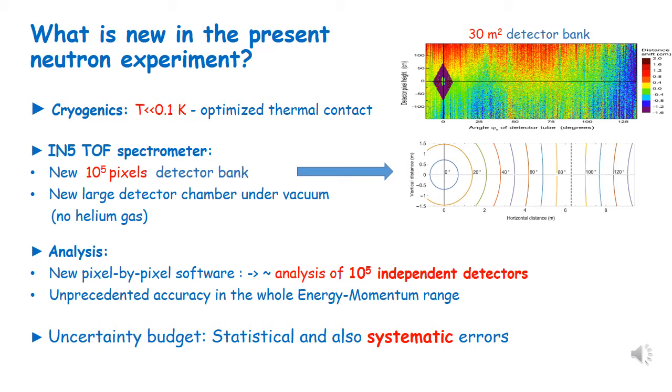The analysis is done with a new program that analyzes pixel by pixel, that is, we have 10 to the 5 independent detectors which cover different angles, and there are many pixels for a given angle. This gives us an unprecedented accuracy in the whole energy and momentum range, and also because we are able to treat statistical errors very easily, but also we have done a big effort treating systematic errors, and this is not often done in this kind of measurements.